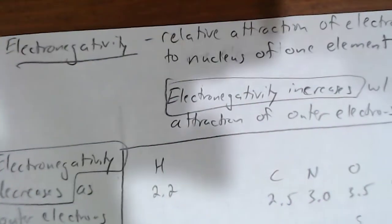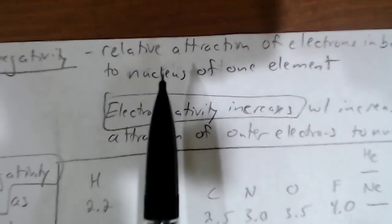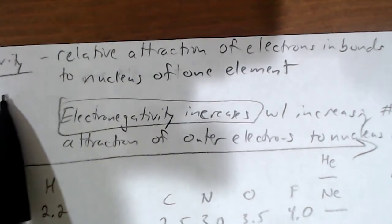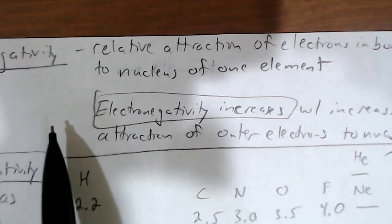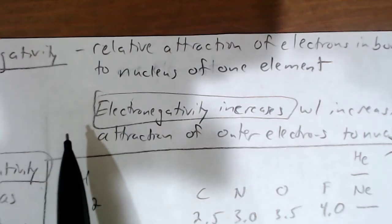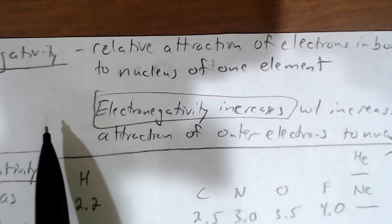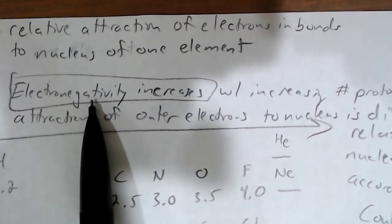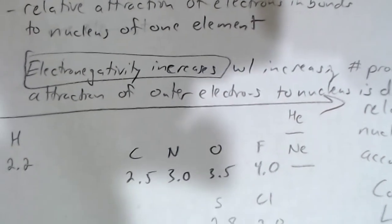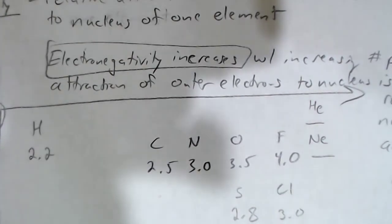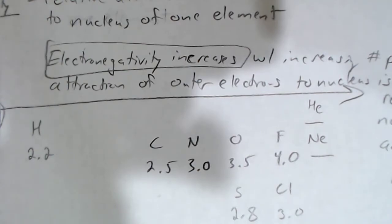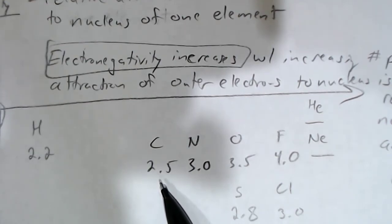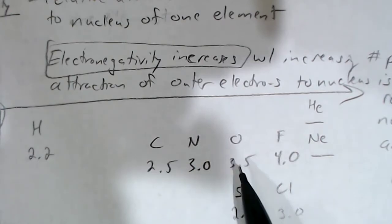Finally, we also have electronegativity. Electronegativity describes the relative attraction of electrons in bonds to the nuclei of an element. The trends for electronegativity are the same as for ionization energy — they both describe how much an outer electron is attracted to the nucleus. The difference is that electronegativity describes the attraction of outer electrons that are in bonds. As you go to the right in the periodic table, electronegativity will increase because the outer electrons will be more attracted to the nuclei as there are more and more protons. As you go to the right, you have increasing values.